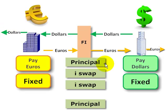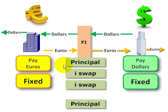The first thing they do is exchange the principal. This is the first difference between a currency swap and a plain vanilla interest rate swap. In the interest rate swap, the notional is not exchanged. However, in a currency swap, the counterparties swap the principal at the start, and typically that tracks closely with the exchange rate — in this case, perhaps $10 million in exchange for 6 million euros.